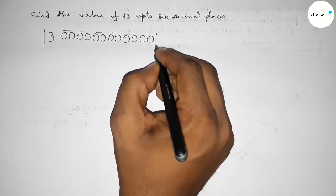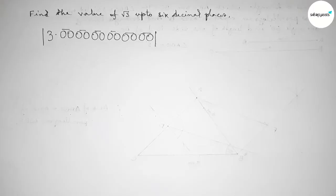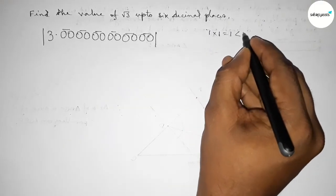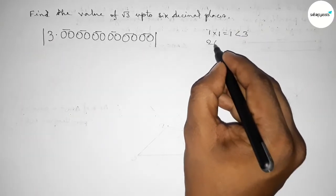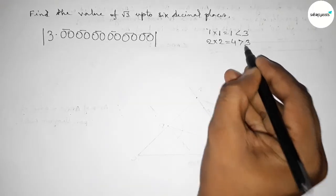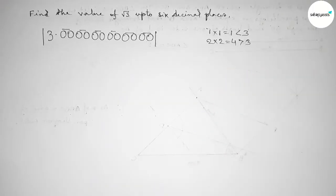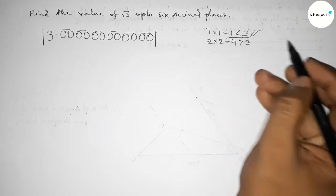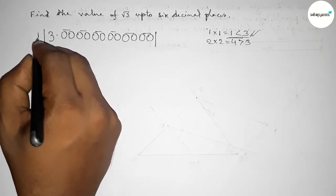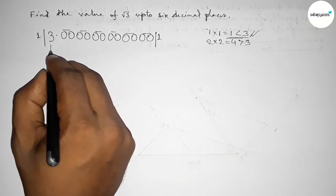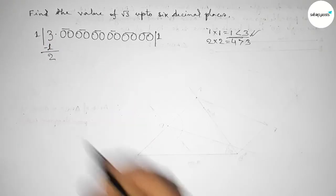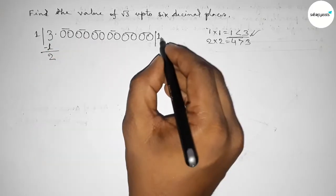Now draw the division line on both sides. Next we have to take a number and multiply by that number. Taking 1 and multiplying by 1, which is less than 3. If you take 2 and multiply by 2, this is 4 which is greater than 3. So we have to take 1 since 1 is less than 3 and almost near 3. So we write 1, subtract: from 3 this gives remainder 2.